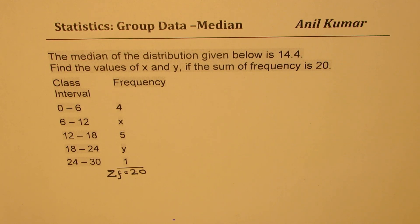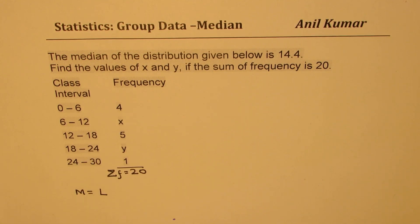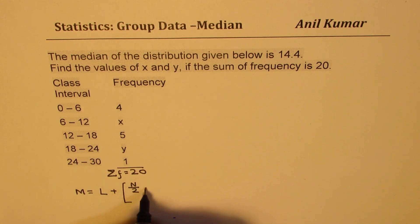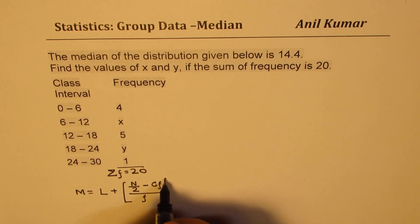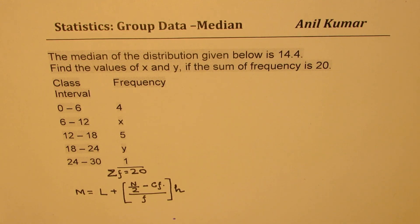Now the formula to find the median is given by: Median equals lower limit of the class interval plus n by 2 minus cumulative frequency, over the frequency of the modal class, times the class interval. That's the formula which we are going to use.